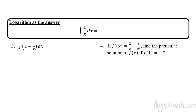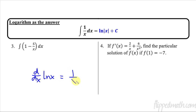Next up, we have logarithms as the answer. When you take the integral of 1 over x, you get the natural log of x. But we have to include the absolute value. Just as a reminder: when you take the derivative of the natural log of x, you get 1 over x — so it makes sense that the antiderivative goes back to natural log of x.